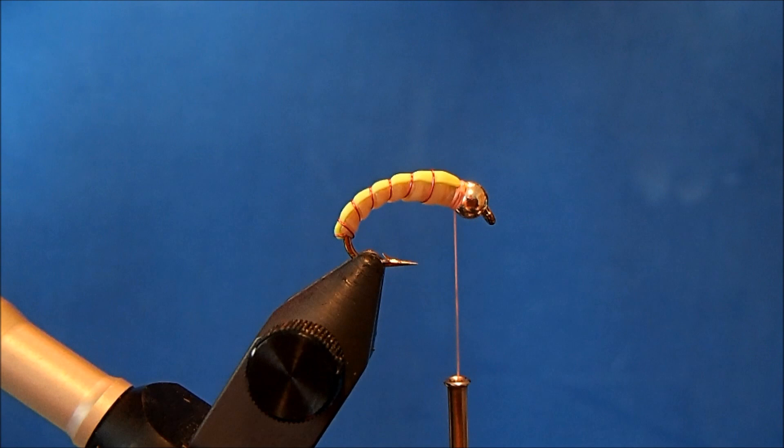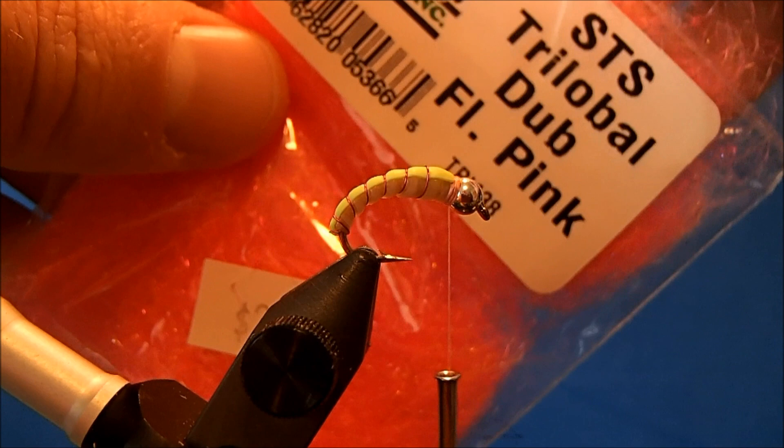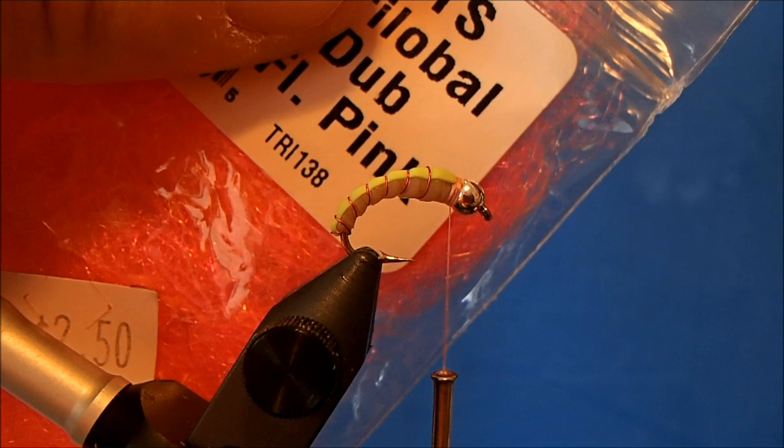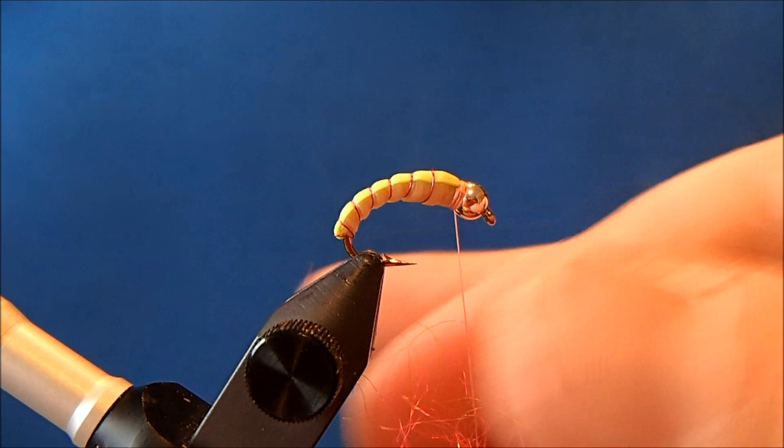Now I'll come through and put in a collar to this pattern and you can use whatever color that you like. Now I'm going to keep everything with the pink theme so I've got some synthetic pink dubbing here and I'll put in a collar to this pattern.